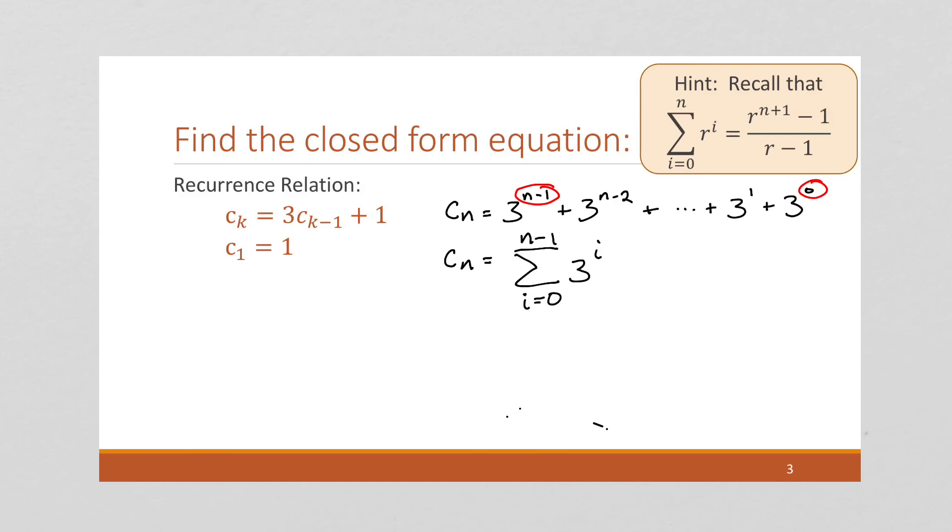So notice this is a little different. We're not going to n, we're going to n minus 1. So you have to keep track of those boundaries. But if we keep track of those boundaries and we substitute this in to our formula...